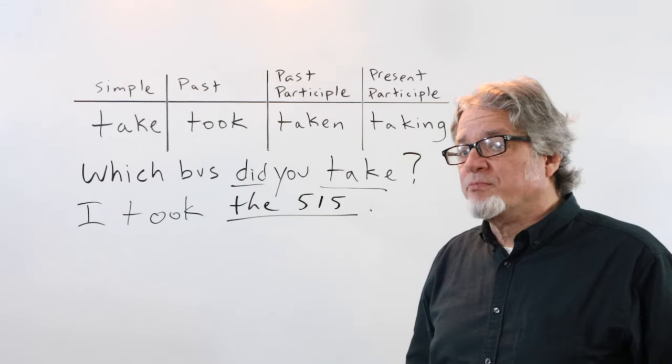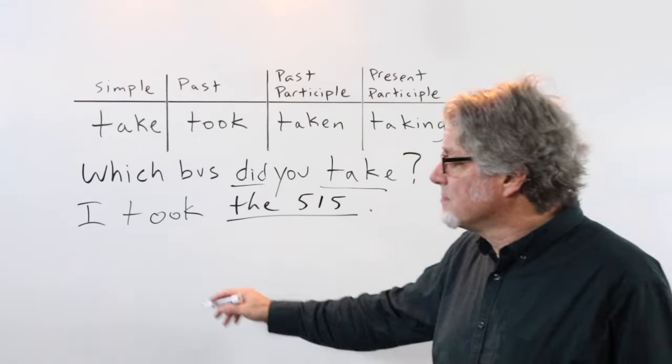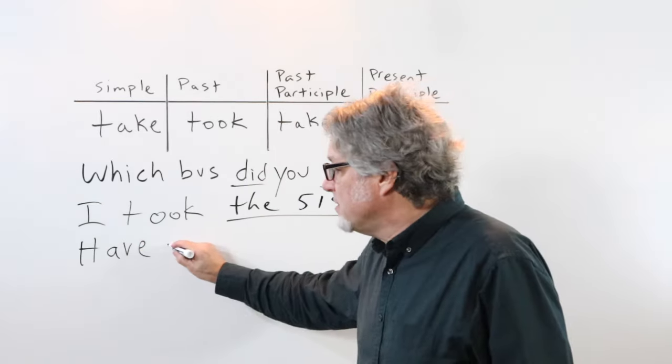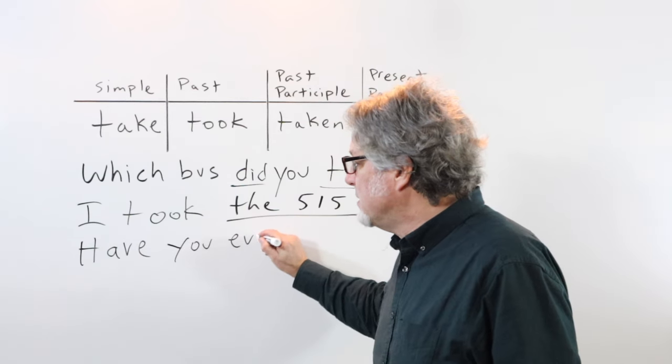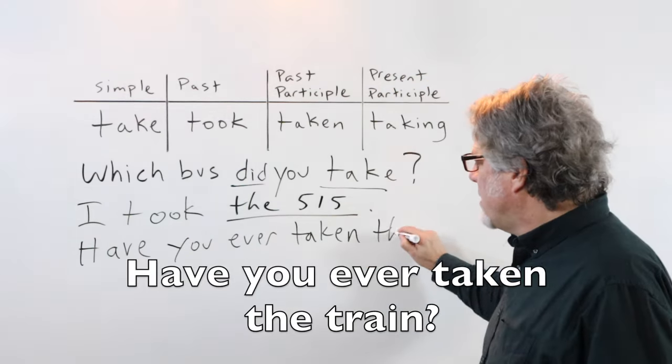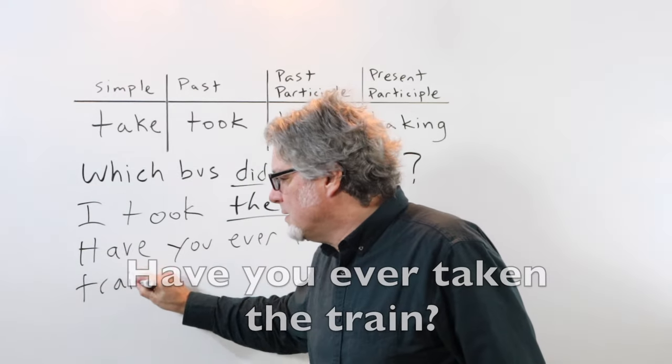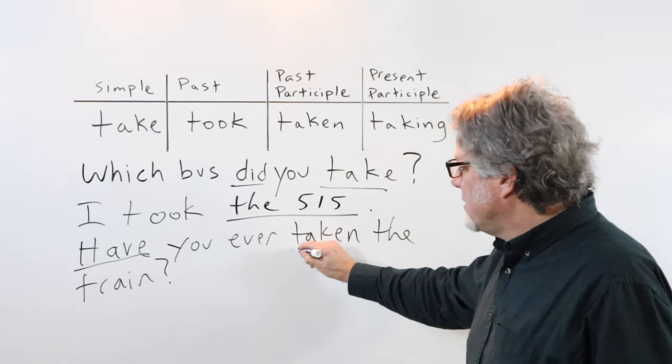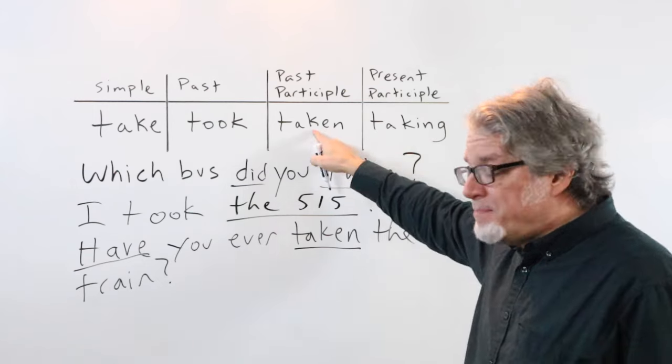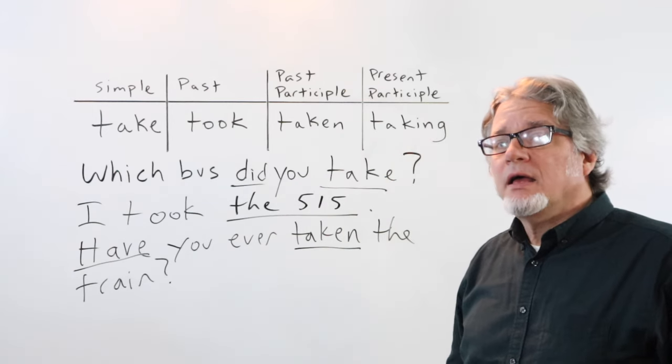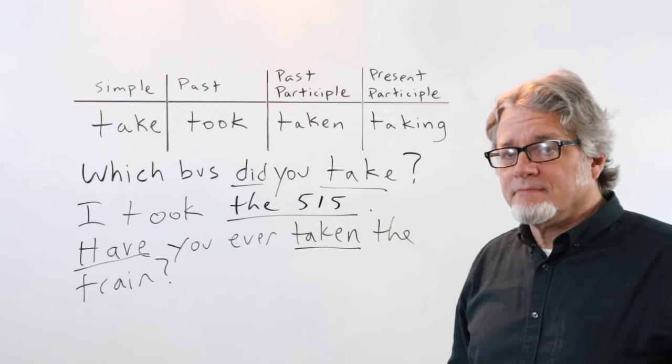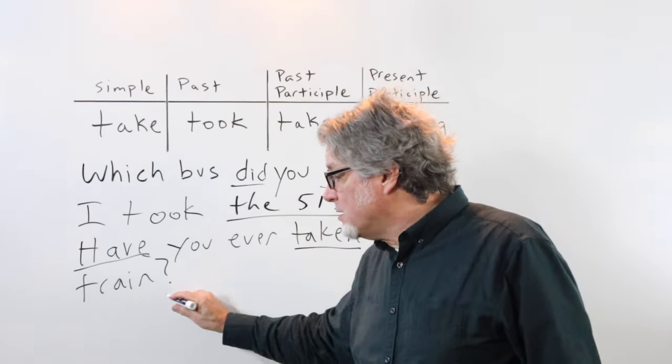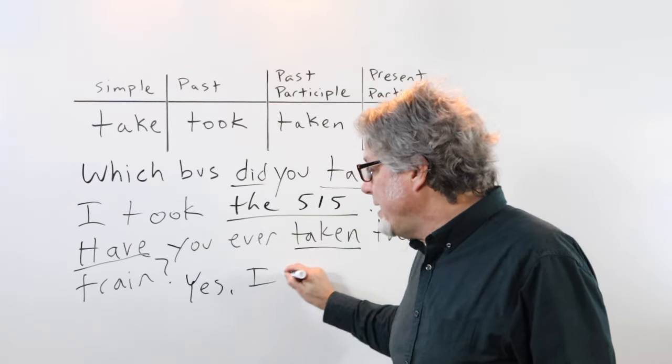If we put this in the present perfect tense, I can form a yes-no question. Have you ever taken the train? Here is the helping verb, and here is the main verb. It's in the form of a past participle. Have you ever taken the train? And the answer to this question, if it's a yes-no question, would simply be yes, I have.